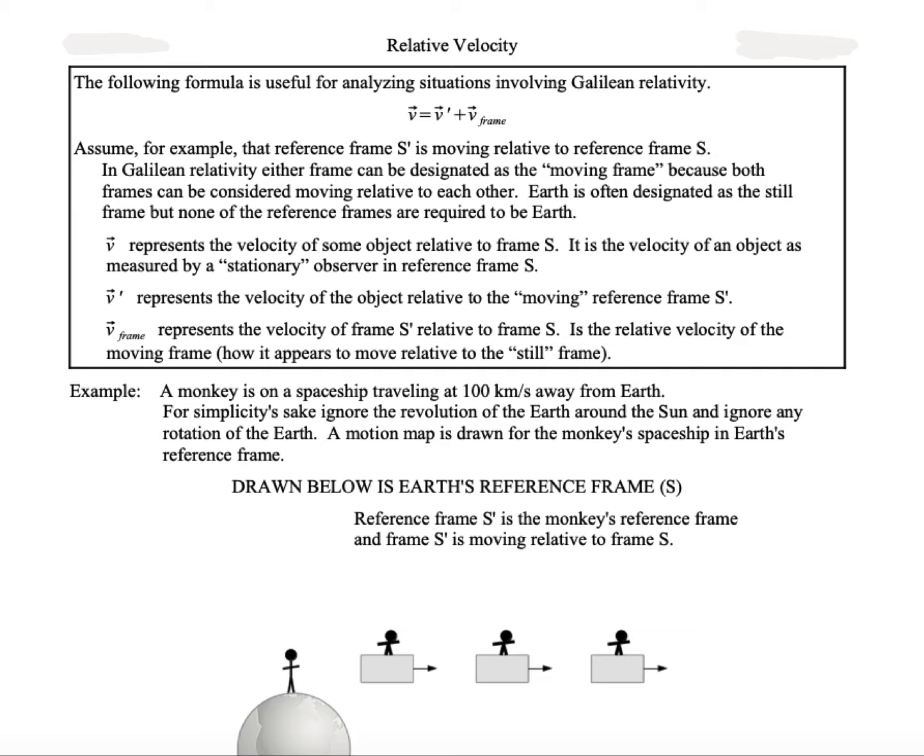All right, so relative velocity has a formula that is super useful for basically a wide variety of situations. And the formula is V equals V prime plus V frame.